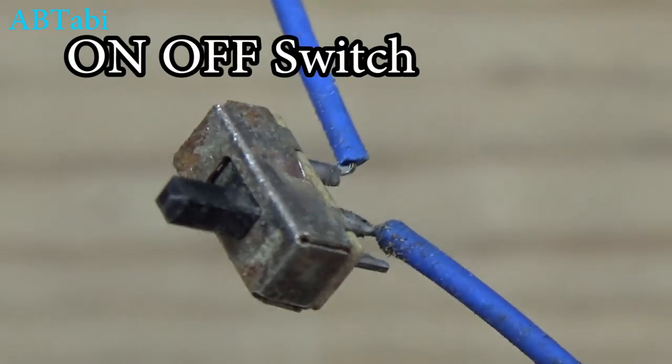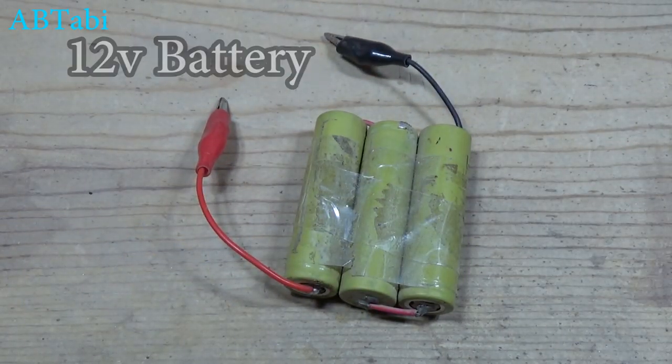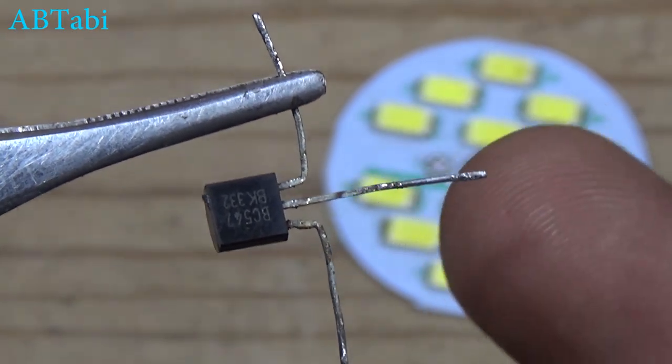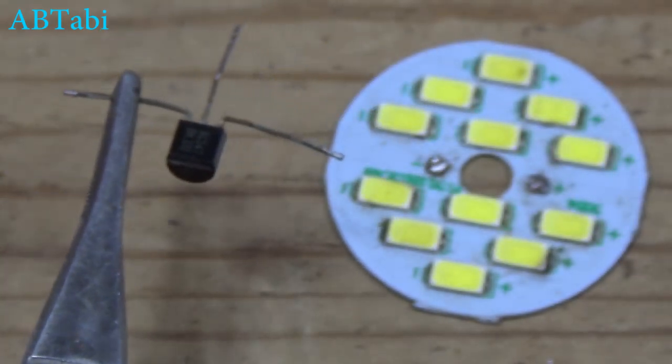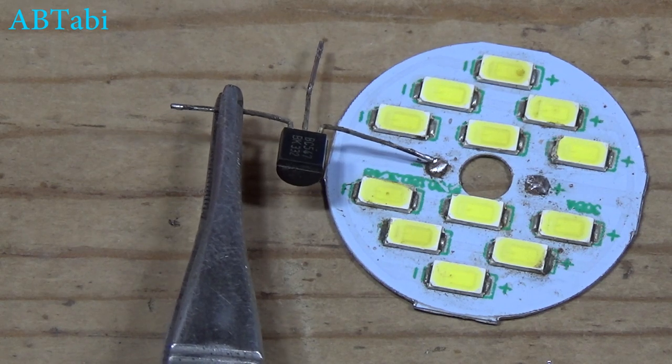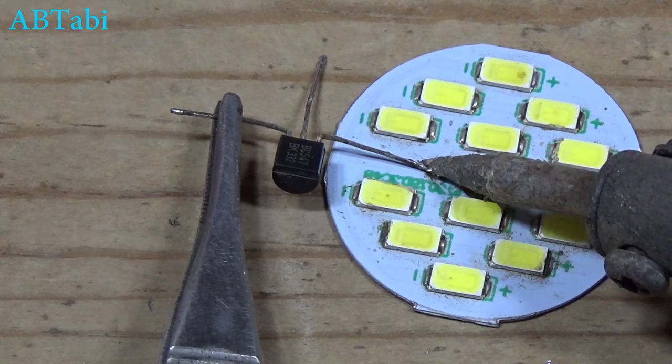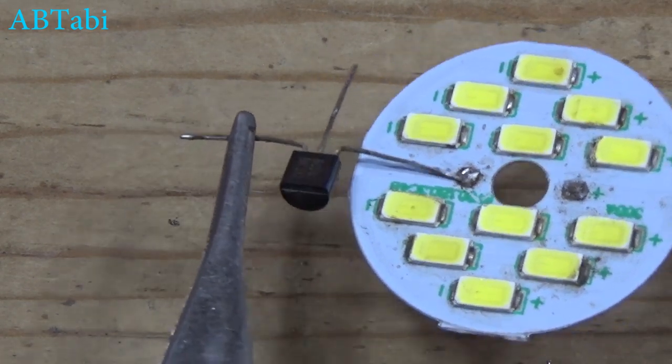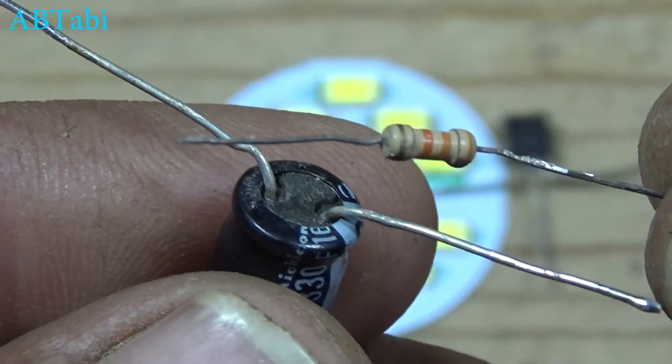Transistor BC547 left to right: first pin is collector, second pin is base, and third pin is emitter. We connect transistor collector pin with LED light negative side. 330 uF capacitor and 33k resistor connect in parallel like this.